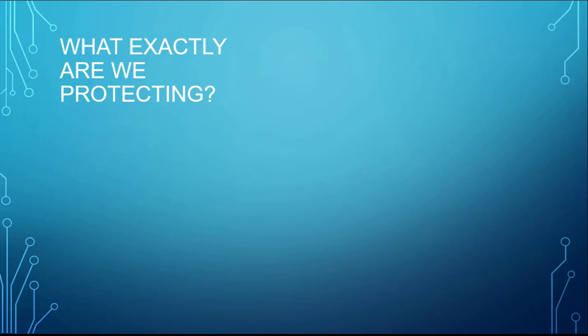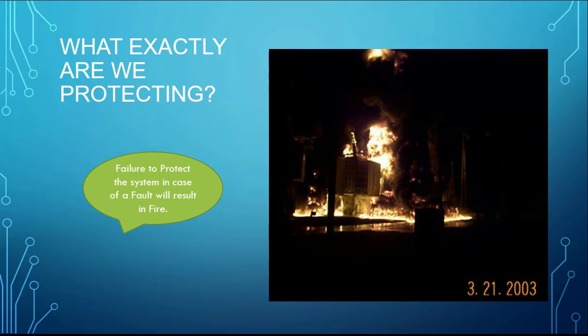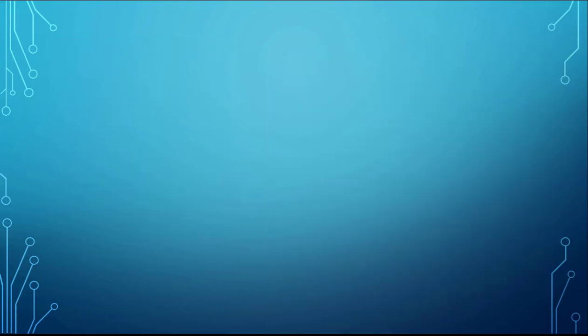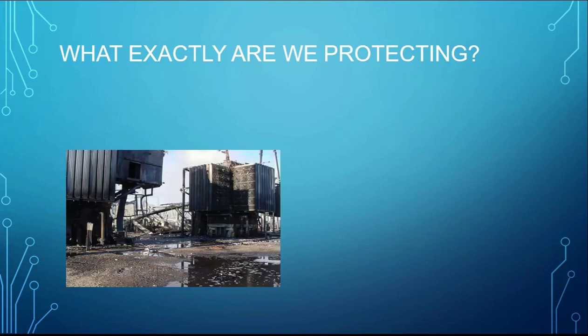What exactly are we protecting? A failure to protect the system in case of a fault will result in fire, as we can see in this picture here — this is a transformer that is on fire. This is as a result of a system failing to protect; maybe a circuit breaker somewhere didn't react, failed to open its contacts. As a result, we have a huge fire. You can see here the aftermath of a fire in a substation.